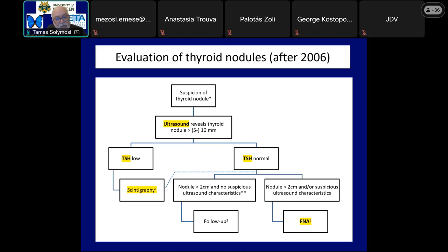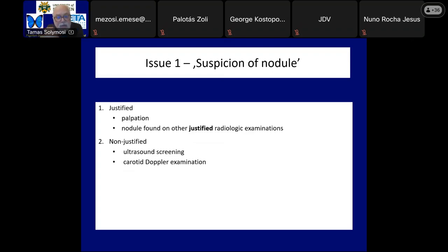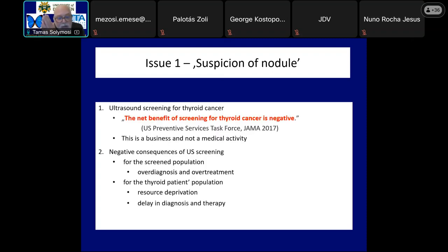The first critical point of the guidelines is the suspicion of the nodule — in some ways this is the very essence of the algorithm. The guidelines include lesions which are palpable or suspicious on palpation, and nodules found during other imaging procedures. No guideline considers ultrasound screening to be warranted. It means that neither ultrasound screening nor examination of the thyroid during carotid Doppler examination is justified.